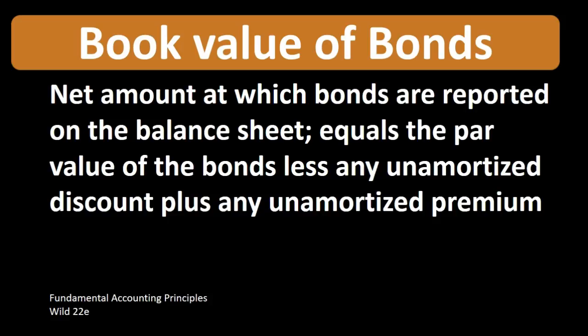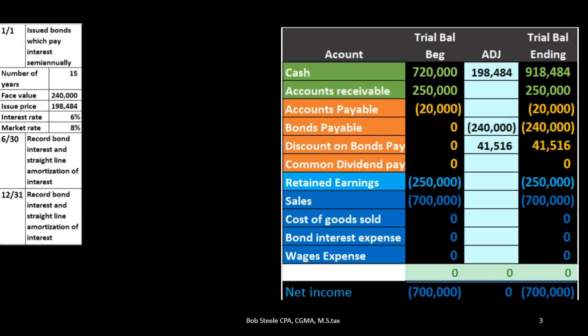What is the premium or discount? How does it get there and how are we going to report these bonds? When considering bonds, we usually think of them in terms of us purchasing them as investments. However, in this case we are considering the bonds as if we are a corporation issuing the bonds, similar to how we might take out a loan if we needed cash flow. The difference between bonds and a loan for company financing has to do with the interest rate.